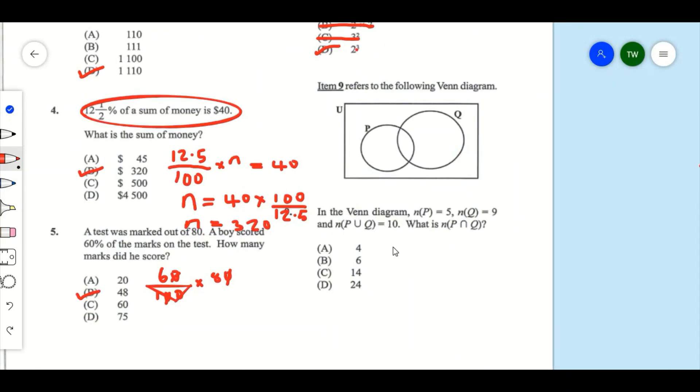Item 9 refers to the following Venn diagram. As you can see here, we have a Venn diagram with P and Q. The number of elements in P equals 5, the number of elements in Q equals 9, and the number of elements in P ∪ Q equals 10. What is the number of elements in P ∩ Q? That's going to give us 4. All you need to do is add the number of elements in P plus the number of elements in Q and subtract that from the number of elements in P ∪ Q.